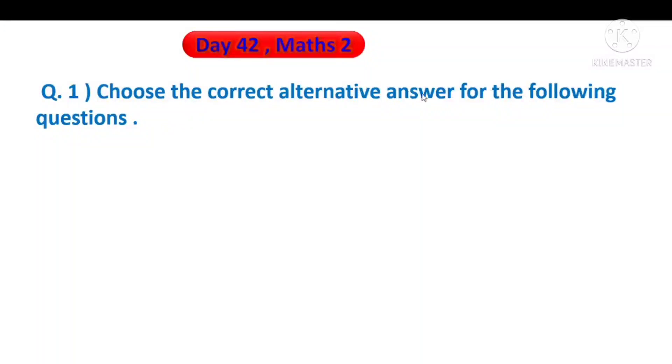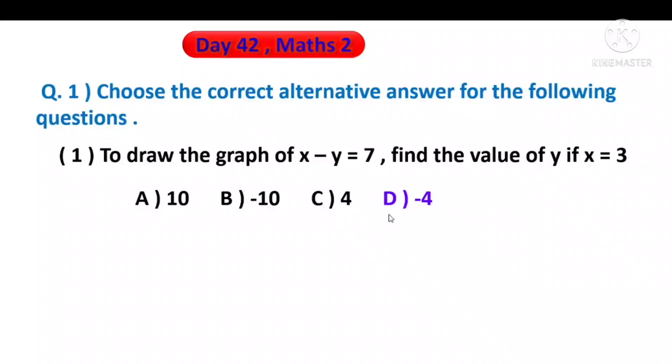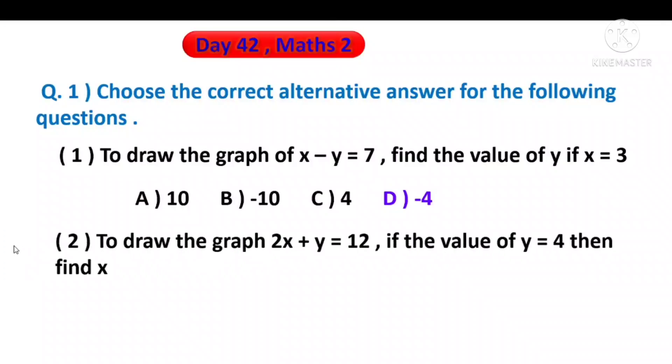Choose the correct alternative answer for the following questions. First, to draw the graph of x minus y is equal to 7, find the value of y if x is equal to 3. To draw the graph of x plus y is equal to 12, if the value of y is equal to 4, then find x.